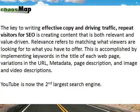The key to writing effective copy, driving traffic and repeat visitors — we don't want one-time visitors leaving — is creating content that's both relevant and value-driven. It actually matches their request when they get there, and we want to make sure that the request actually matches to an offer. This is accomplished by keywords, as mentioned, but you need to put them in the title of each web page. You need variations of the keywords in the URL — you often see this in optimized blogs. The metadata gets back to the code. Page descriptions and image and video descriptions — you can utilize images and videos in what's called universal search. That's multiple ways to get listed in the search engines. And YouTube is now the second largest search engine — very powerful.